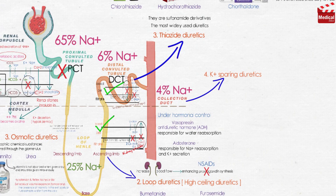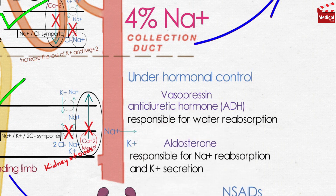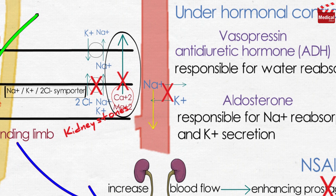Potassium-sparing diuretics act in the collecting tubule to inhibit sodium reabsorption and potassium excretion. So they increase the loss of sodium in urine causing diuresis, and increase the concentration of potassium in the blood causing hyperkalemia.